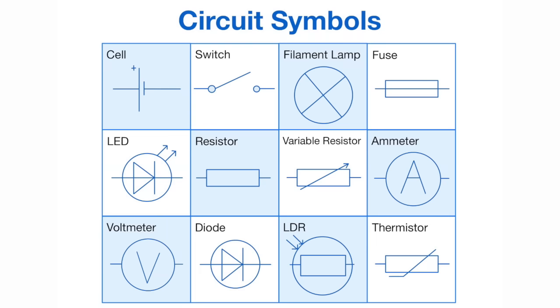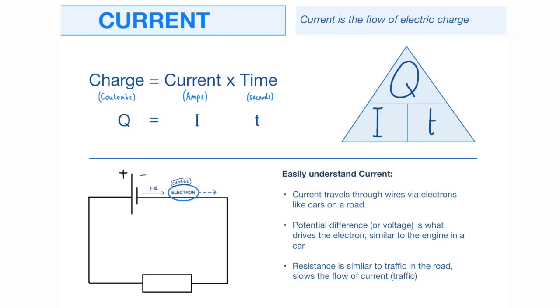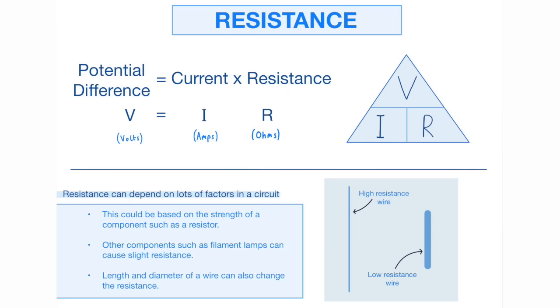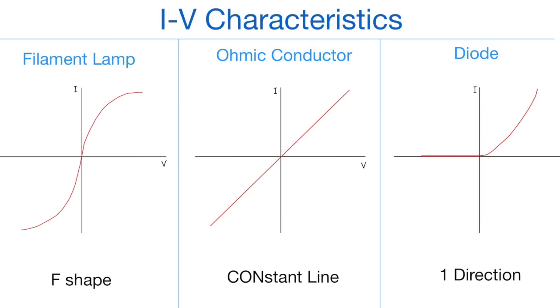Topic two is electricity. First of all, we have the circuit symbols — you're probably sick of seeing these by now. Throughout the electricity topic, there are very important keywords such as current, potential difference, and resistance that you must know about. With certain devices throughout a circuit, there are a certain set of graphs that show the relationship between current and voltage, and these are known as IV characteristics.